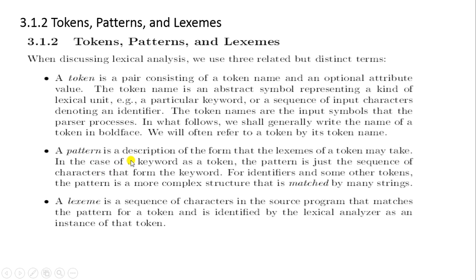A pattern is a description of the form that the lexemes of a token may take. In the case of a keyword as a token, the pattern is just the sequence of characters forming the keyword. For identifiers and some other tokens, the pattern is a more complex structure matched by many strings. A lexeme is a sequence of characters in the source program that matches the pattern of a token and is identified by the lexical analyzer as an instance of that token.